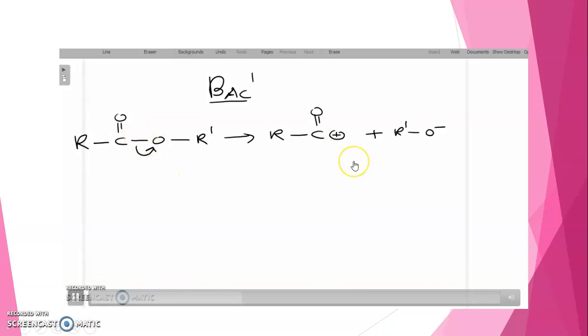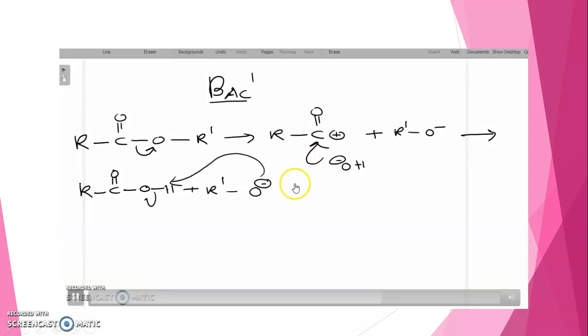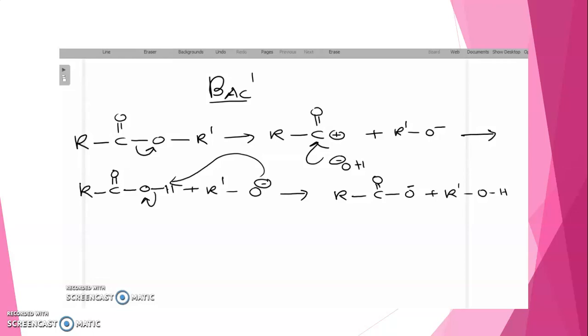So here the second step will take place. Now this acylium carbonium ion is attacked by hydroxyl ion to produce a neutral carboxylic acid. To form a carboxylic acid, and in the next step this alkoxide ion abstracts a proton from the carboxylic acid to form a carboxylate ion and a neutral alcohol molecule.